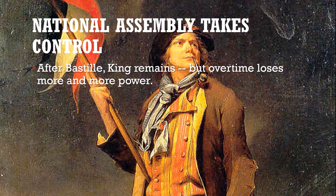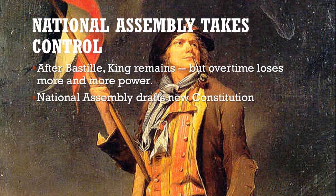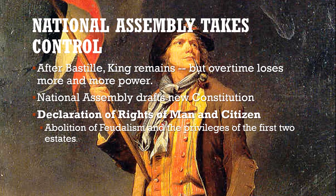After the storming of the Bastille, the king technically remained, holed up in his palace of Versailles, pretty much powerless. The country was now being controlled by the National Assembly — the group from the Third Estate who had taken the Tennis Court Oath. The National Assembly began to keep its word. The Declaration of Rights of Man and Citizen does away with all of the old noble privilege in France, abolishes feudalism and the privileges of the first two estates, makes people equal under the law, and in many ways is similar to the American Constitution.